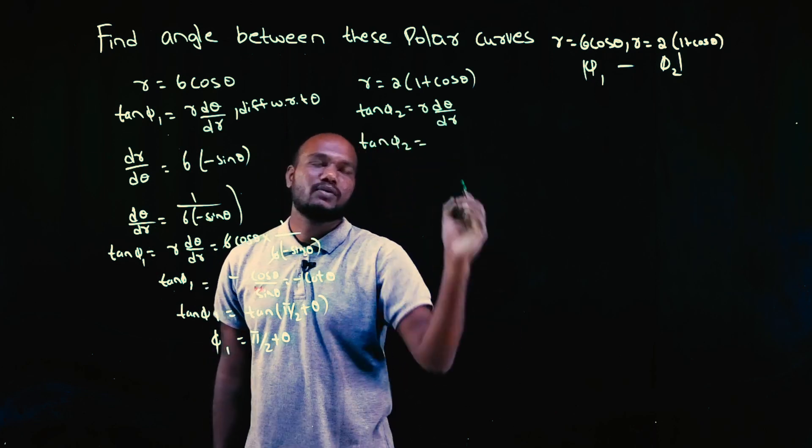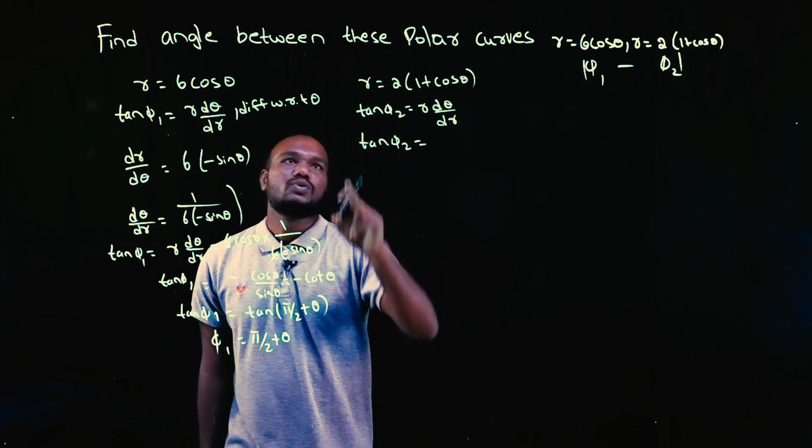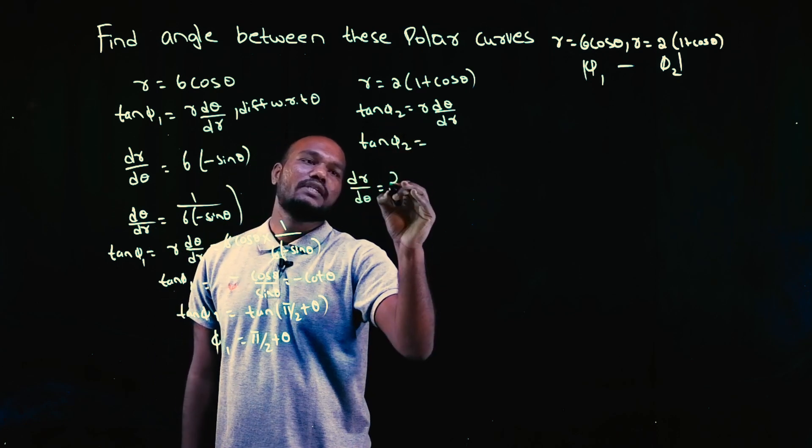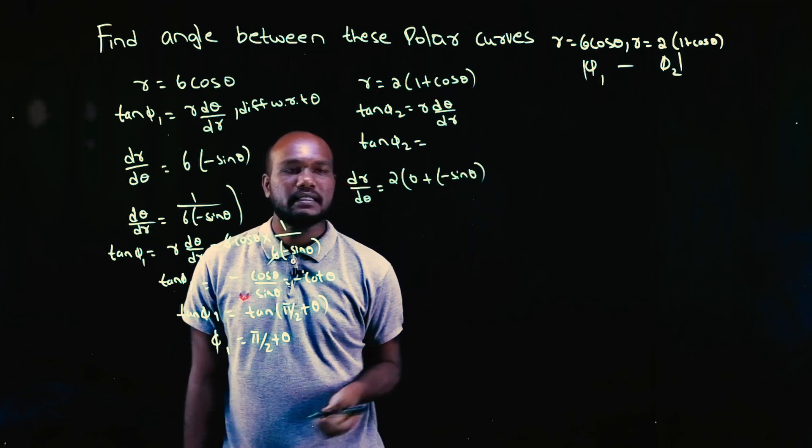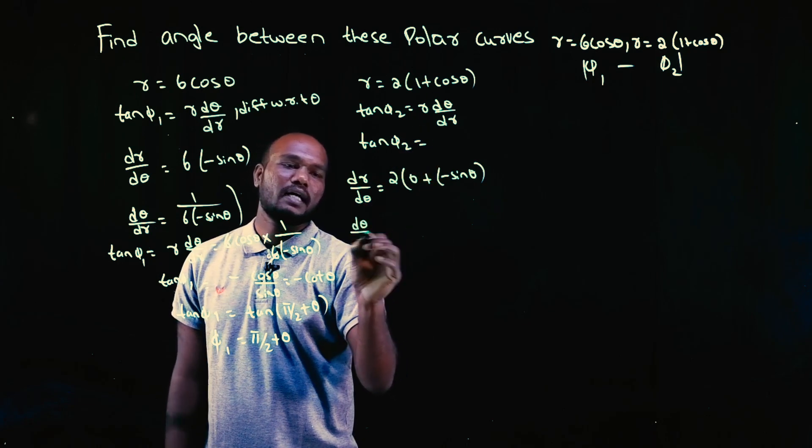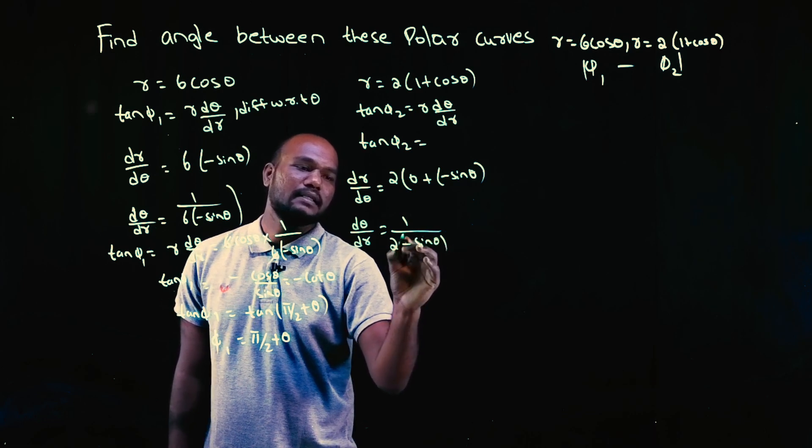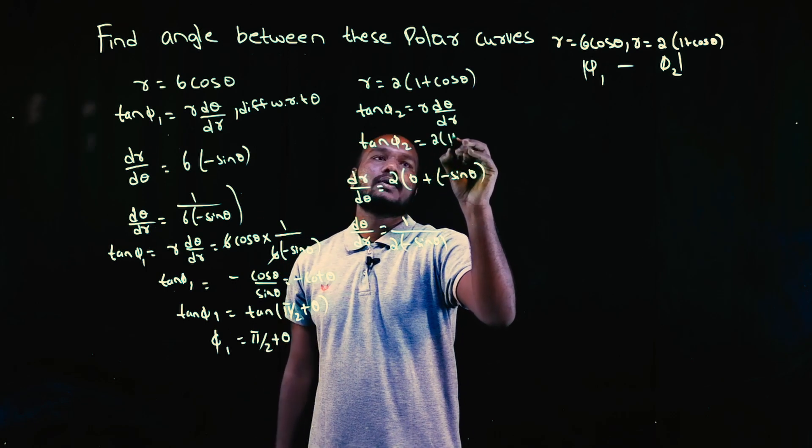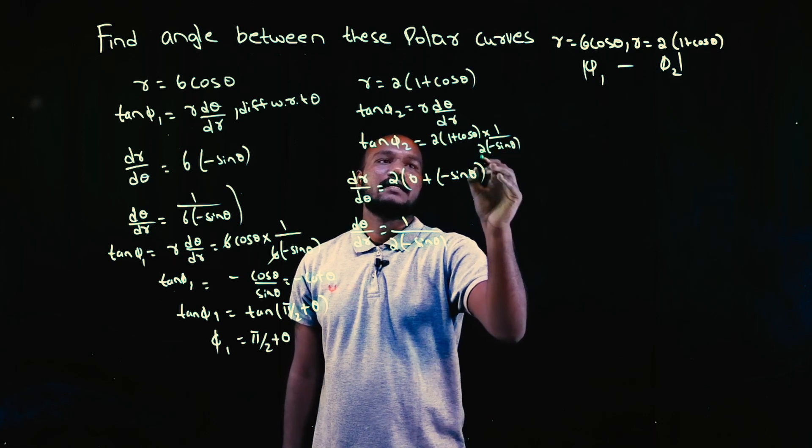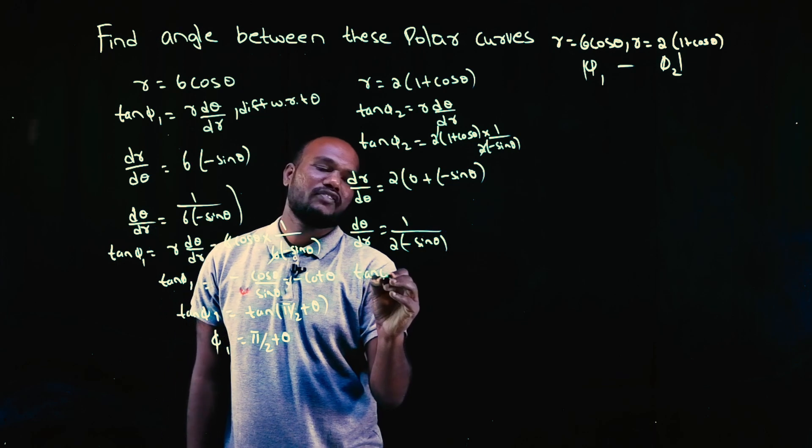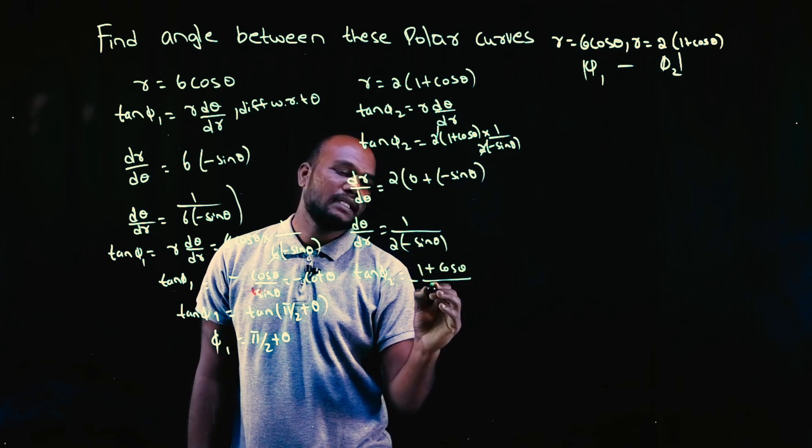Tan φ2 is equal to R value. What is R value? R value is given directly. So, dθ, dr let's find out. R differentiation is dr upon dθ. 2 is number. Just leave it like this. One differentiation is 0. Cos θ differentiation is minus sin θ. I don't want dr by dθ. I need dθ by dr. So, dθ upon dr is equal to 1 upon 2 into minus sin θ. You can just go and replace here. R, what is R value? 2 into 1 plus cos θ times 1 upon 2 into minus sin θ. 2 can be taken out.